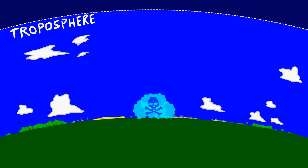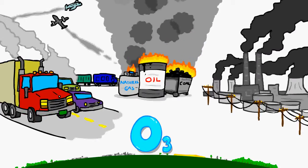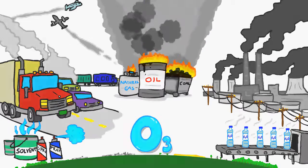Ground level ozone primarily exists due to human activities that burn fossil fuels. Transportation, power and industrial plants, and other activities expel nitrogen oxides and hydrocarbons.